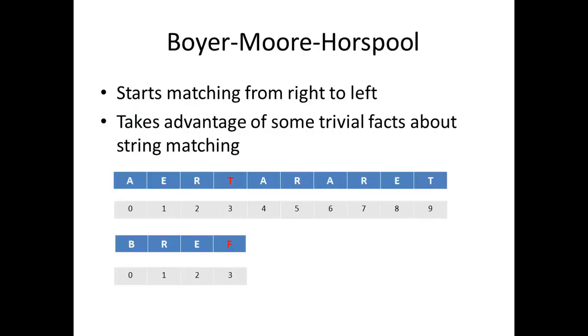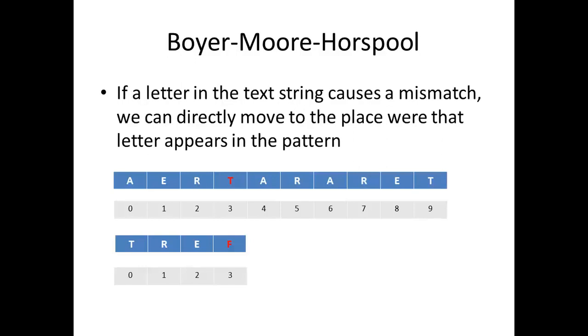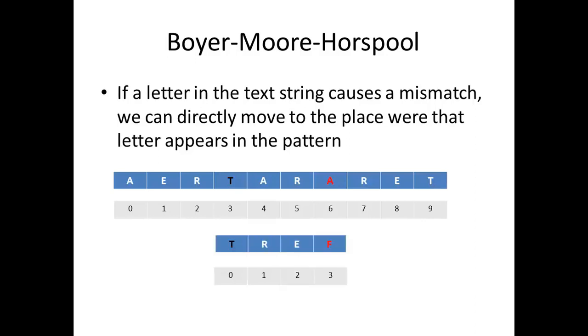One of the algorithms that solve string matching and one of the most widely used is the Boyer-Moore-Horspool algorithm. This starts matching from right to left, as you can see, and takes advantage of some trivial facts about string matching. Firstly, if a letter in the text string causes a mismatch, we can directly move to the place where that letter appears in the pattern. So, T here makes us shift by 3 to align with the T in our pattern, and then start comparing normally again.